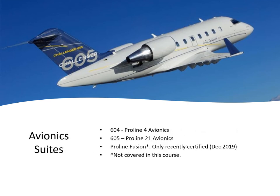On the Challenger 604 you'll find the ProLine 4 avionics system with six very small CRT screens — probably state of the art at its time but looking quite dated nowadays. The 605 is much better, with a ProLine 21 avionics system. We're going to cover both the ProLine 4 and ProLine 21. Very recently they introduced the ProLine Fusion, available as an upgrade on the 604 and 605 — just three very large touch screens and a much better system. Unfortunately it's not covered in this course as we simply don't have the data yet.